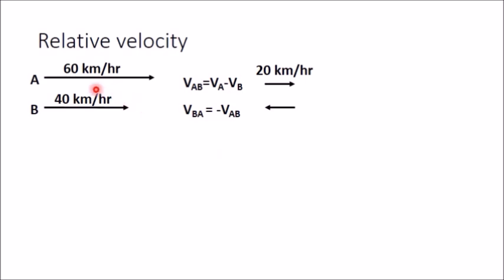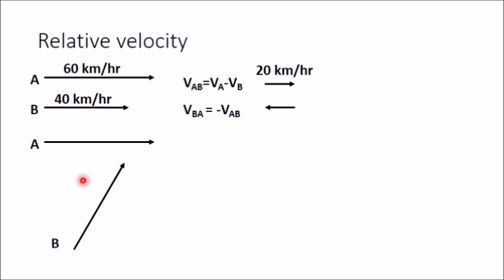These two are vector quantities, so remember that you have to subtract vectorially. Now take another example where the velocity of A is towards one direction and the velocity of B is towards another direction. To determine the relative velocity between these two, you have to subtract these two velocities.